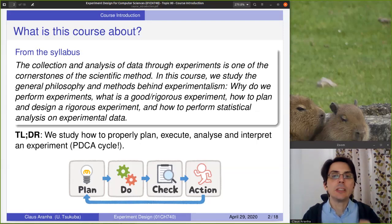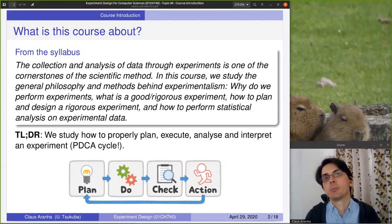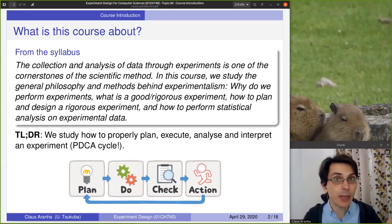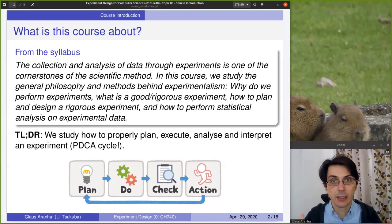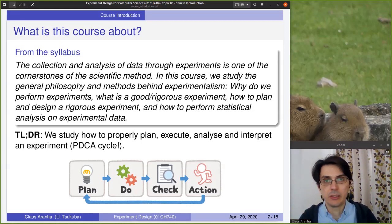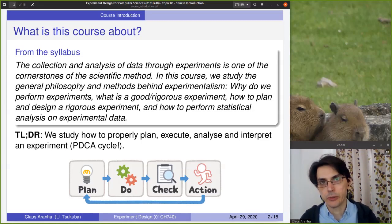I want to put into your minds the idea that gathering the data of the experiment is the smallest part of the experiment. Before the experiment you need to plan what you're going to do, make sure that your plan makes sense, and make sure that your plan will guarantee you a fair and robust experiment. You gather the data — and if you have a good plan, gathering the data is automatic. Now you have to analyze the data, and after you analyze, you have to think about what are the correct conclusions you can draw from the experiment.